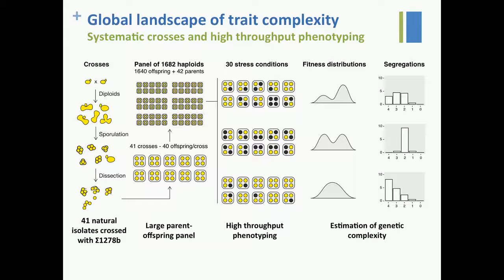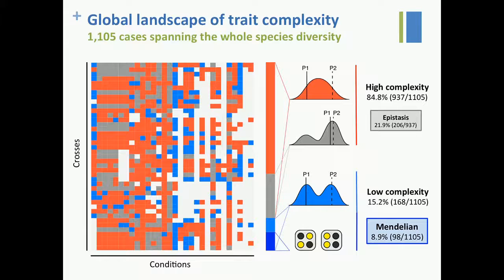Using this dataset, we analyzed the fitness distribution and the segregation. By looking at fitness and segregation together, we could estimate genetic complexity and identify Mendelian traits — those with a bimodal distribution and 2:2 segregation. What we found is that around 85% of cases show high complexity, among which almost 22% present epistatic effects. And 15% show low complexity, with 9% having a true Mendelian inheritance.